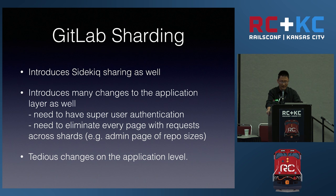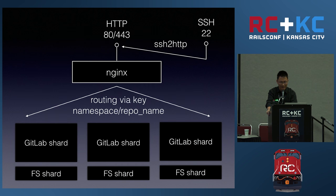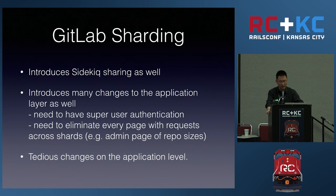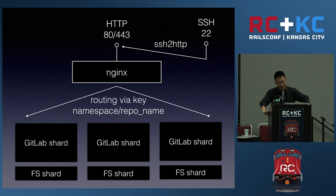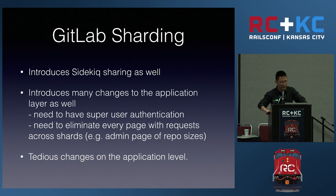Application-level changes are also required, because not every page on GitLab falls into a single shard. Like on the admin page, you can see a list of all repos with their sizes — if that request falls into only one shard, you won't get full information because some repos reside in other shards. So major changes need to be introduced at the application level as well, including super-user authentication, since SSH requests need access across all repos.